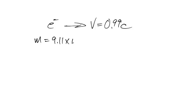We're basically going to accelerate an electron to a velocity of 0.99c. An electron has a mass of 9.11 times 10 to the power of negative 31 kilograms.